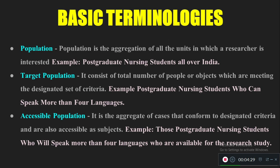When you study this unit, you must be able to understand the basic terminologies. First, population is the aggregate of all the units — each and every unit joined together makes a population — in which a researcher is interested. For example, if I am interested in doing research with postgraduate nursing students, then all the postgraduate nursing students in India become my population.